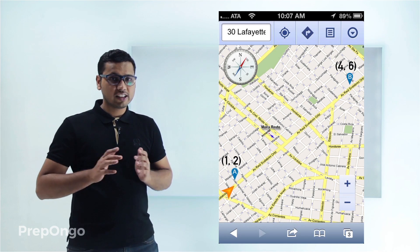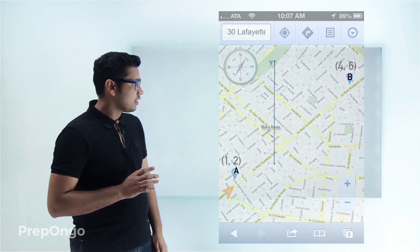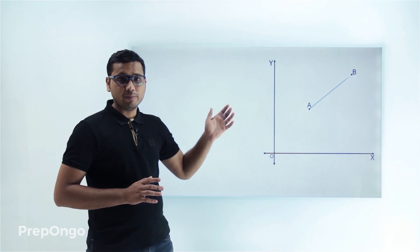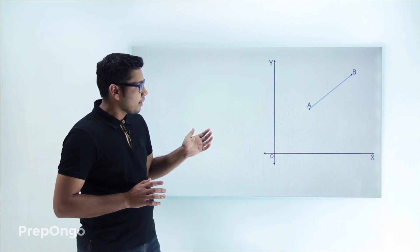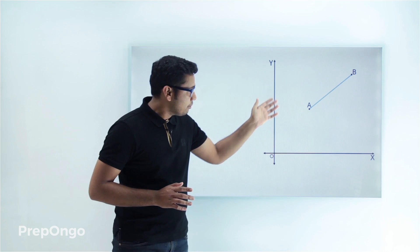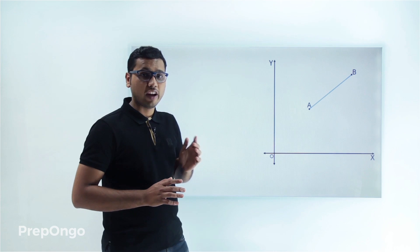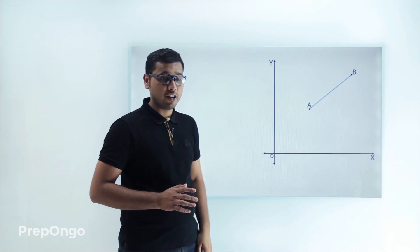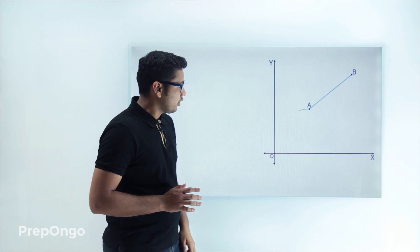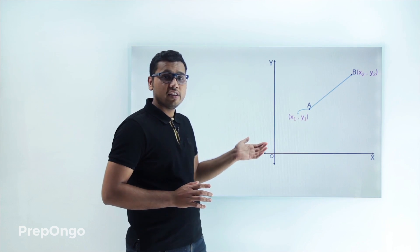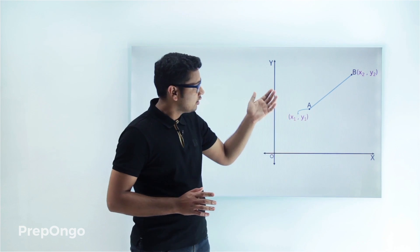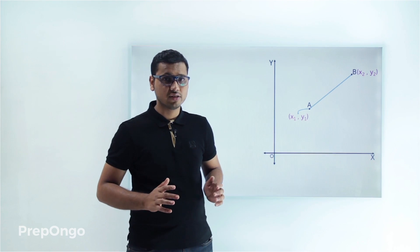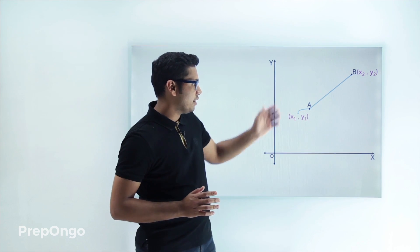Let's bring out a coordinate axis and let's say that point A and point B represent the cities. So this distance AB we have to calculate if we know the coordinates of point A and point B. The coordinates of A are x1, y1 and the coordinates of B are x2, y2. Now let's have some constructions to find the length AB.